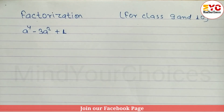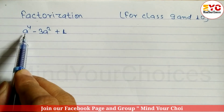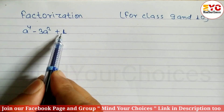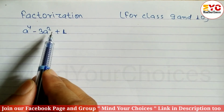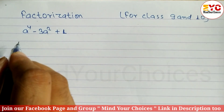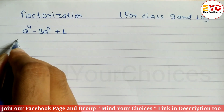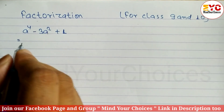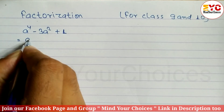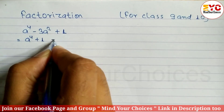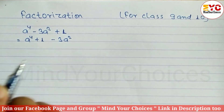Learn how to factorize easily. We have the question a⁴ minus 3a² plus 1, and this type of question is very important for class 9 as well as class 10. First of all, we have to take the first and the last term, so we can write a⁴ plus 1 minus 3a².